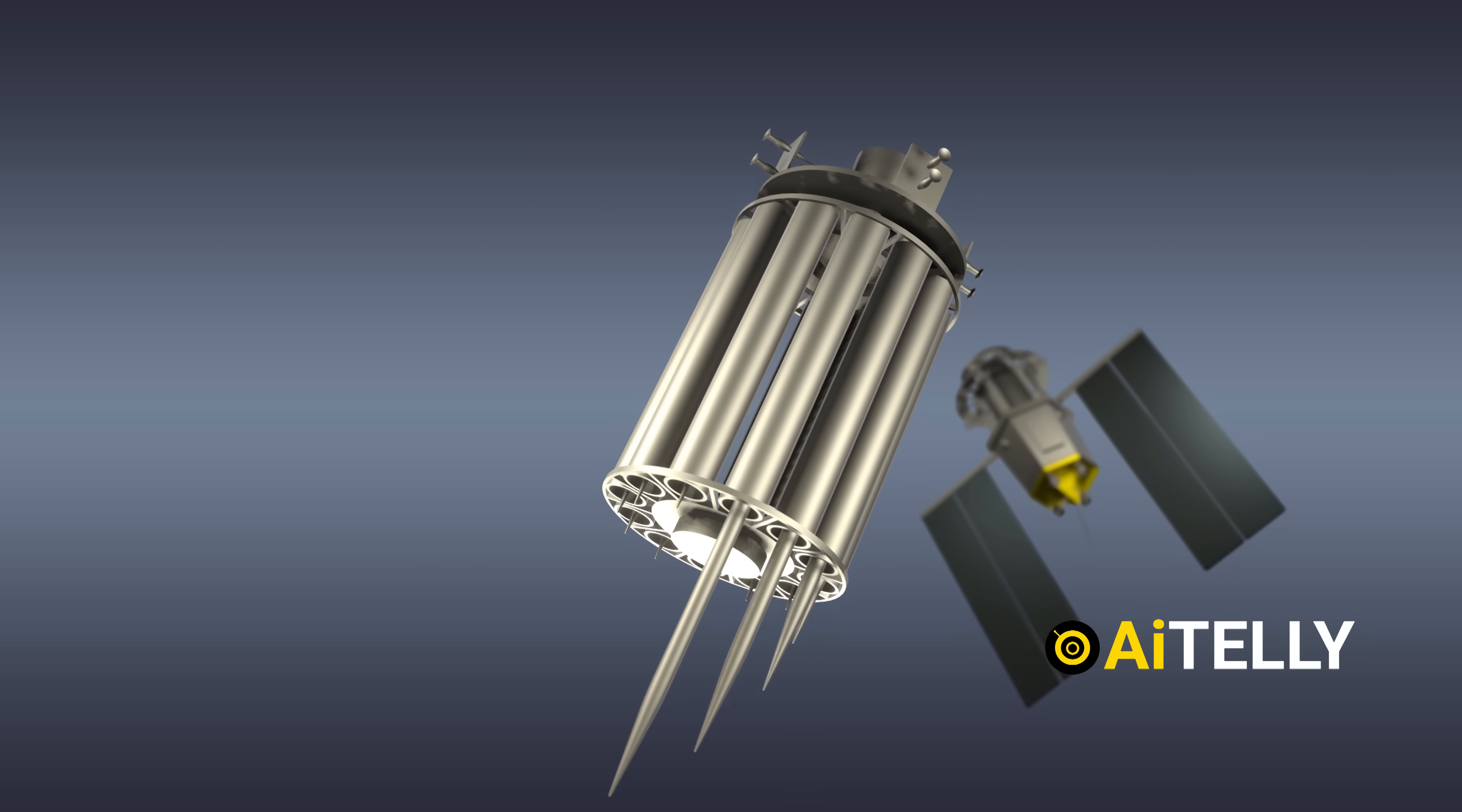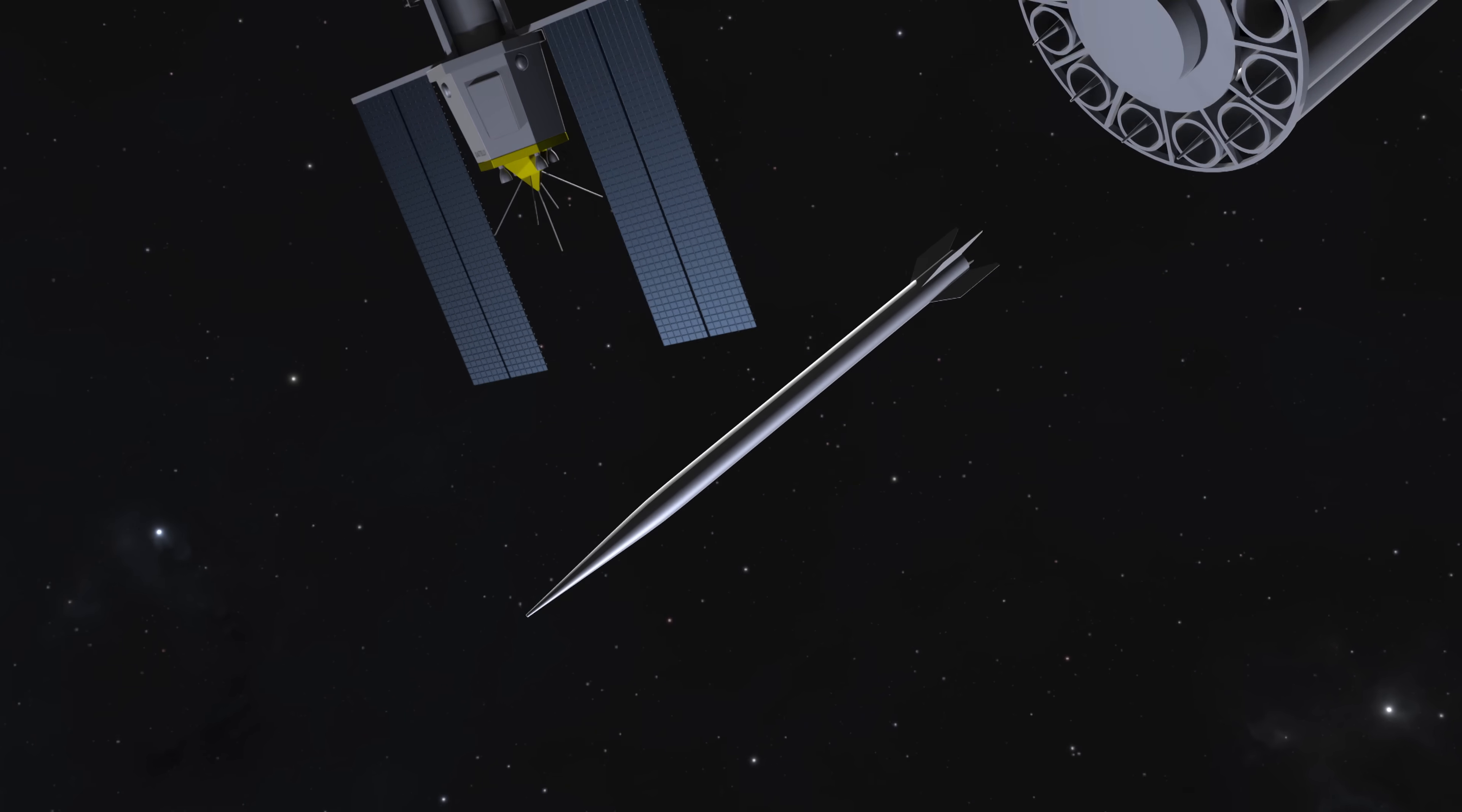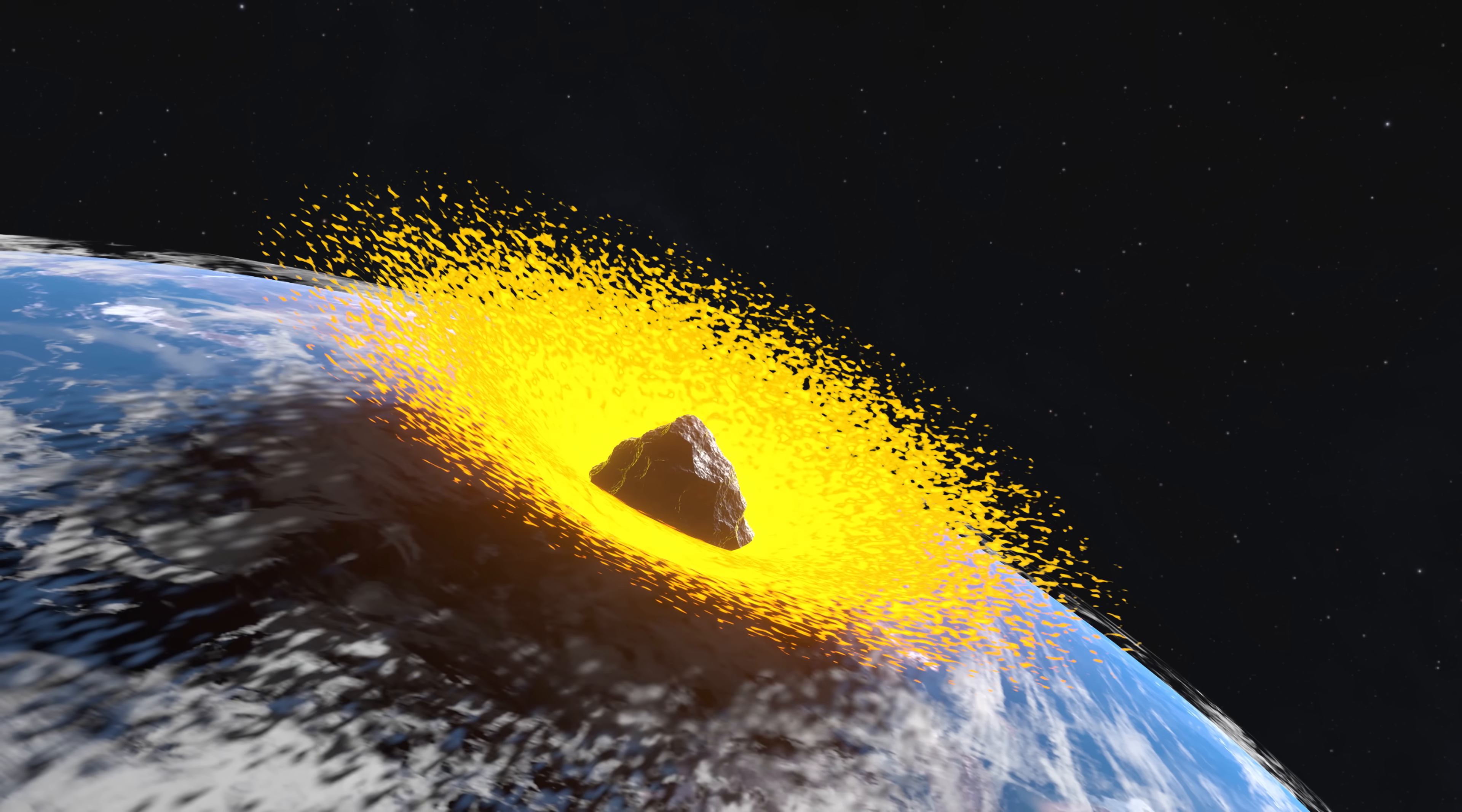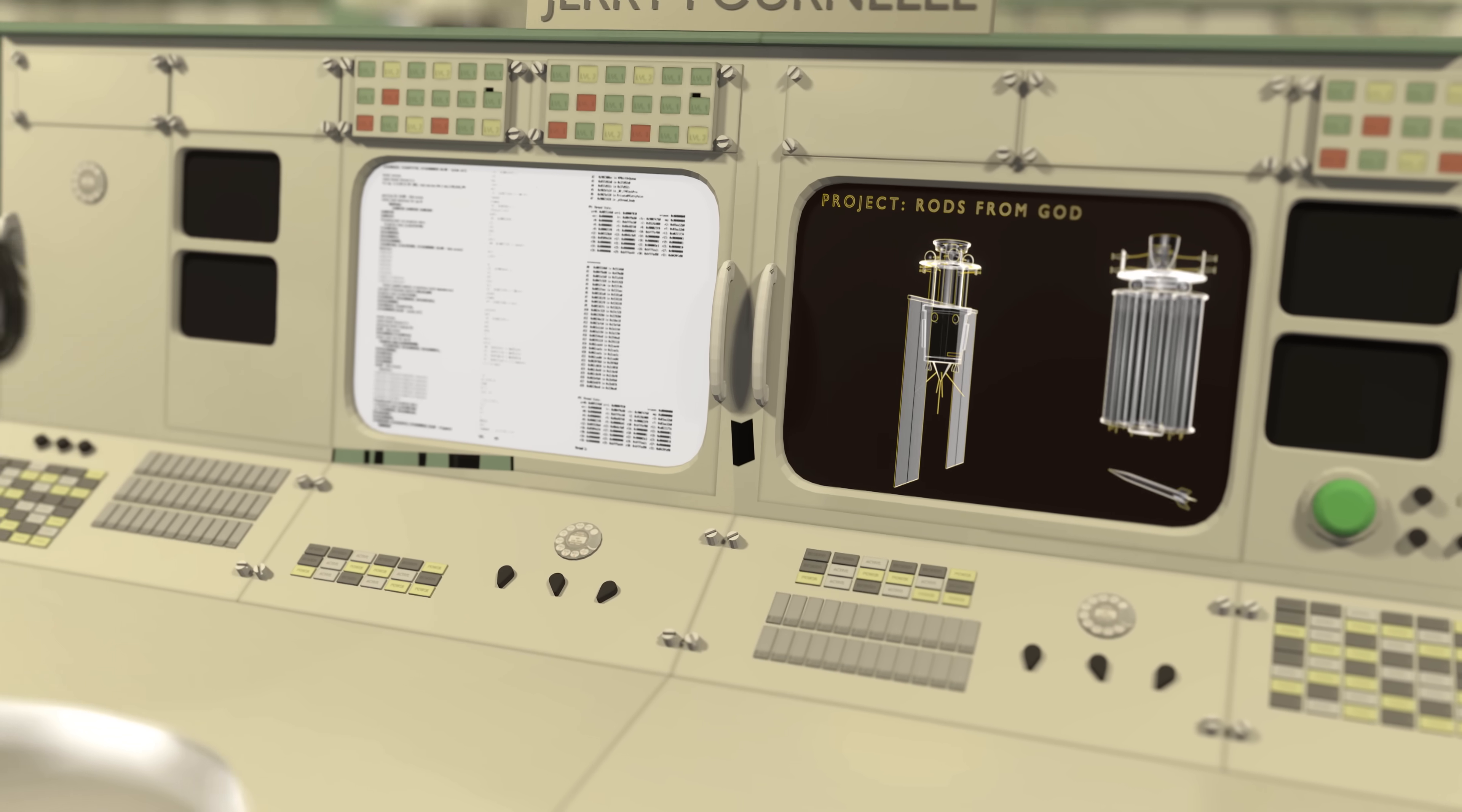But there is this one crazy idea named Rods from God from Jerry Pournelle, a Boeing engineer. He imagined dropping huge metal rods, usually made of tungsten, from space to hit targets on Earth, just like a giant meteor crashing down. He used his knowledge of math, physics, and technology to design this concept, hoping for a powerful space weapon that didn't need explosives.